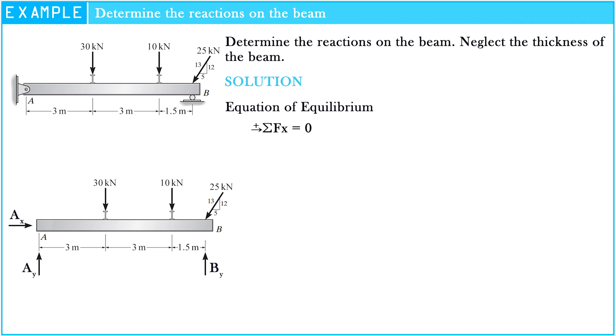The sigma of force along X axis is equal to zero. So AX minus (5/13) × 25 kN = 0. Hence, AX = 9.615 kN.